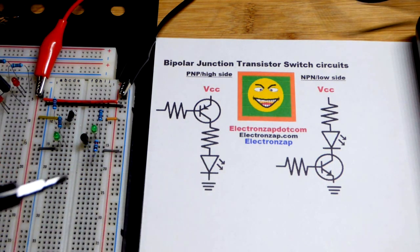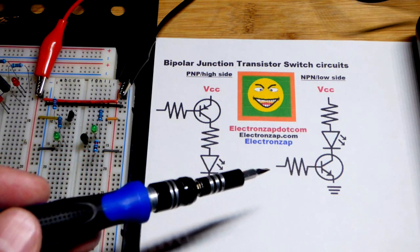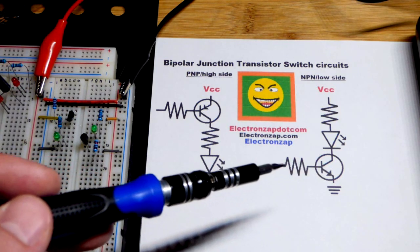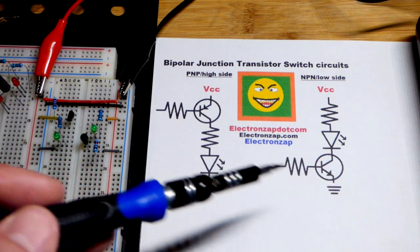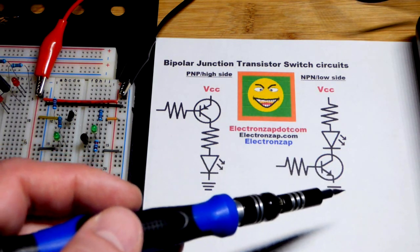You want the load on the collector. The NPN is a little more common, we'll talk about that one first. You have to give a positive voltage of at least 0.7 volts. It's mostly the amount of current that flows through, but it still has to be more positive than ground for the NPN.